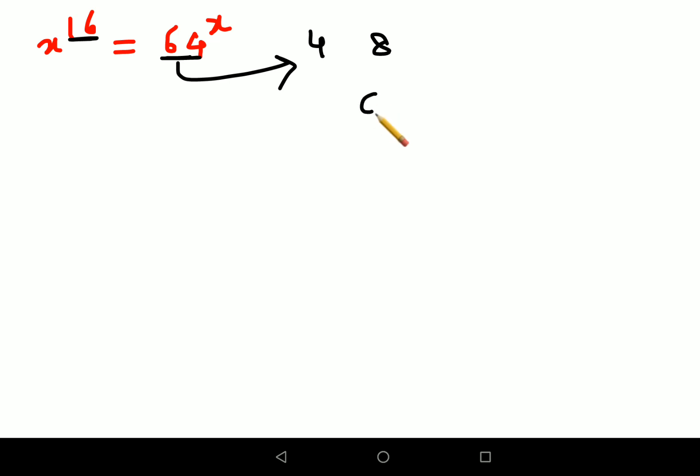But then that becomes complicated because 64 is actually 4 cubed, so we'll stick to 8 as of now. Okay, so we'll write x as nothing but 16, which can be written as 8 times 2.